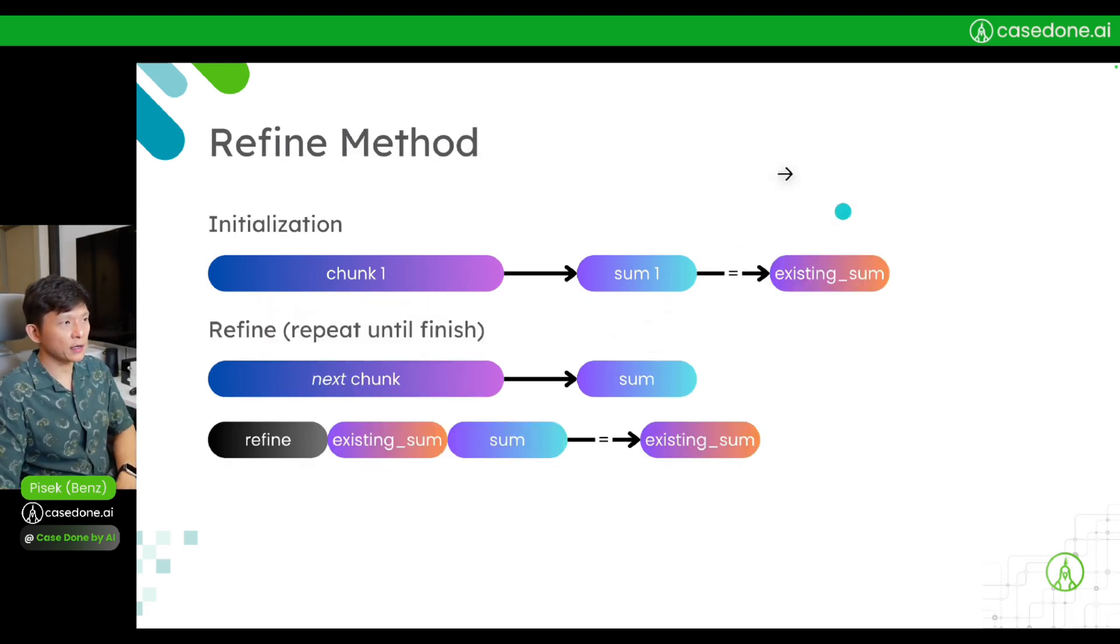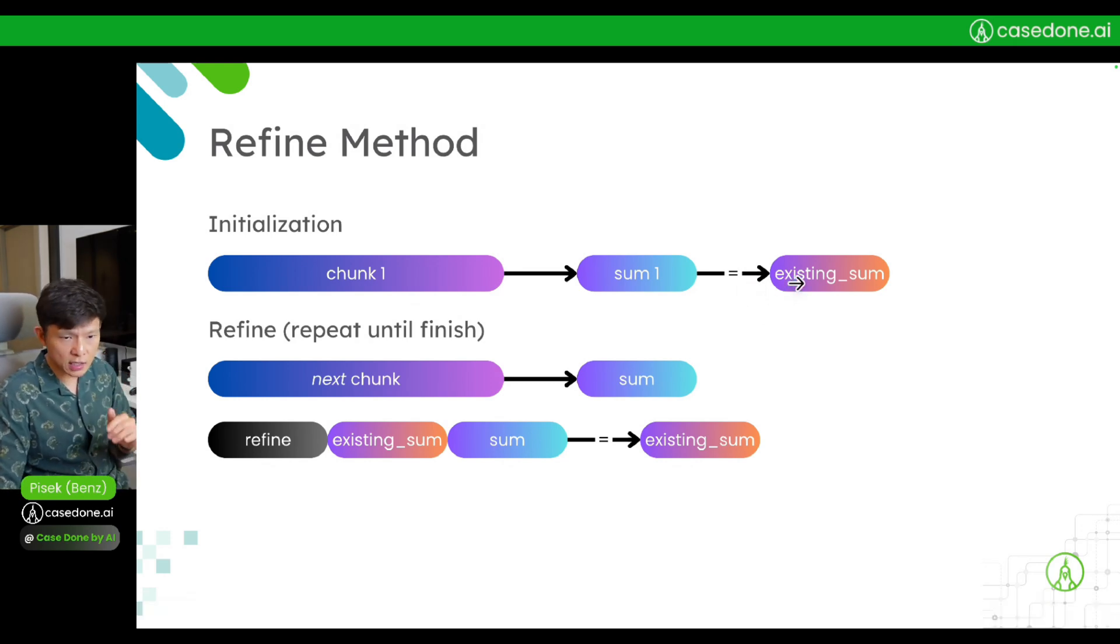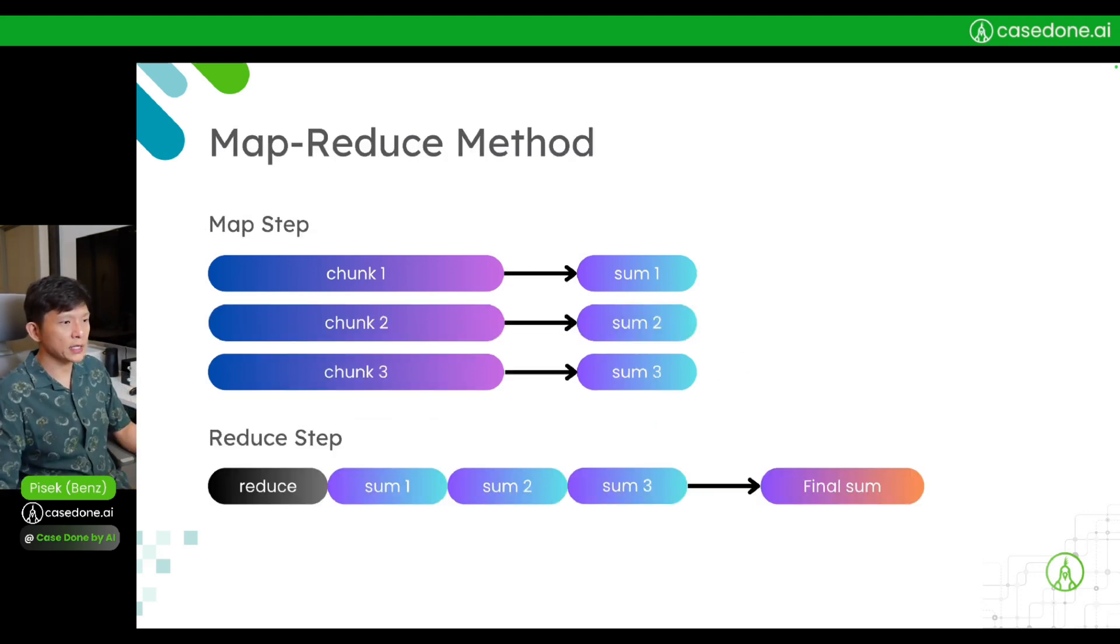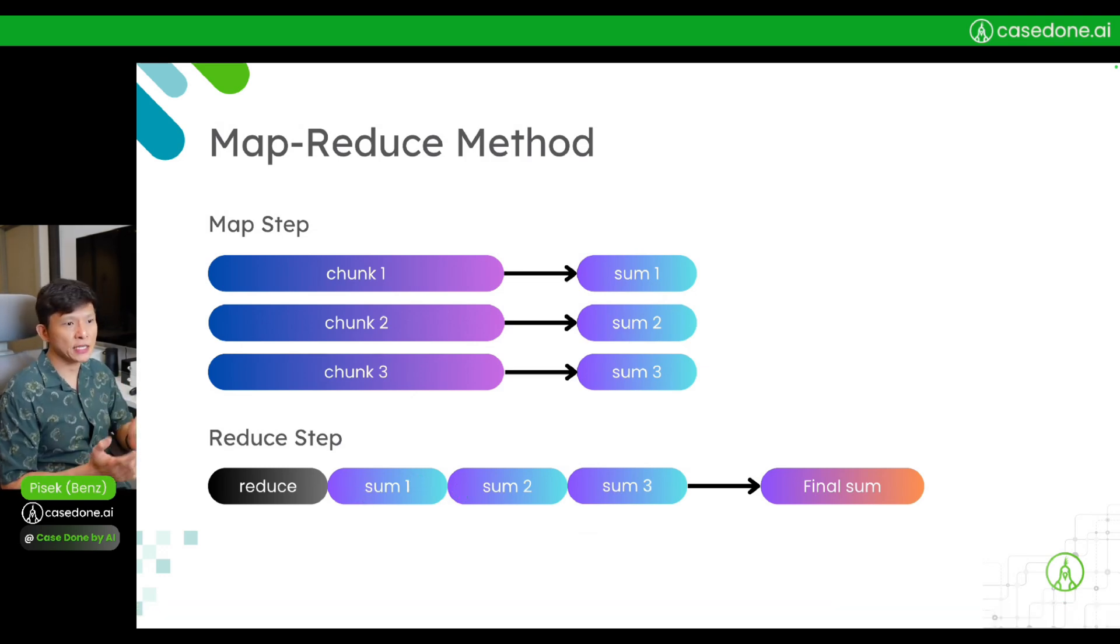...the benefit of the refine method is because you're doing this in sequence, it will have a better flow. It can summarize things as it goes on. But maybe if the model is smart enough, let's say GPT-4 or GPT-4 mini, it might be able...